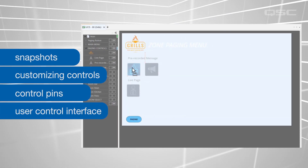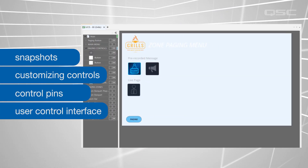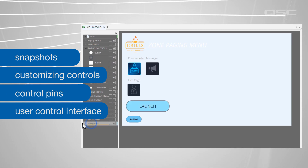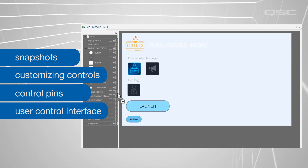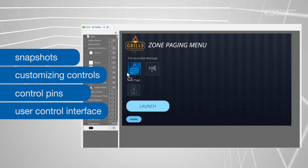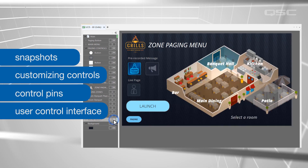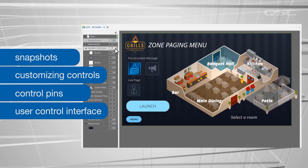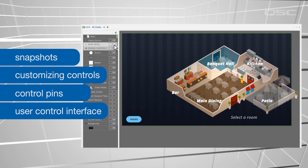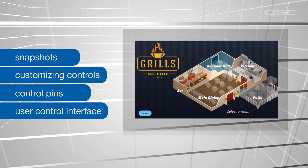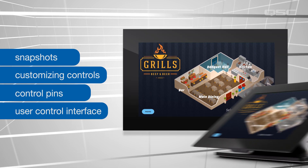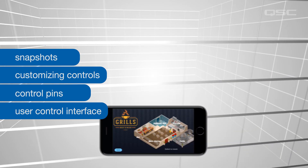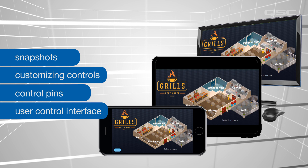Finally, we'll take a nice long dive into creating the User Control Interface, or UCI, which is the interactive visual control that your end users will actually use to interact with the system — whether that be from a native Q-SYS control panel installed in the venue, or deployed remotely via a phone, PC, or tablet.